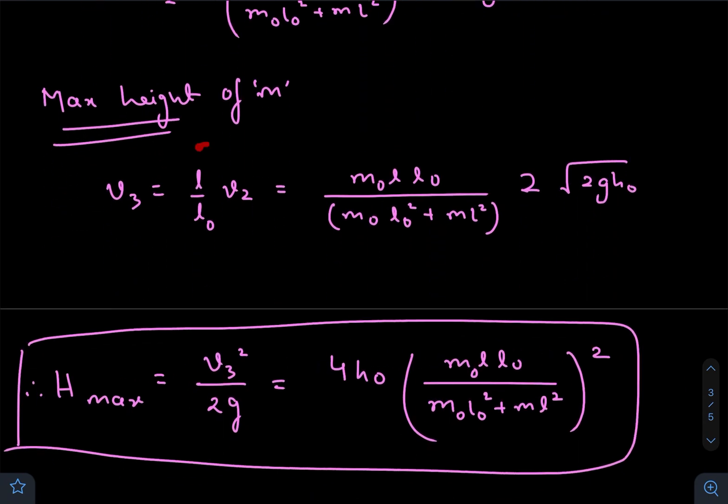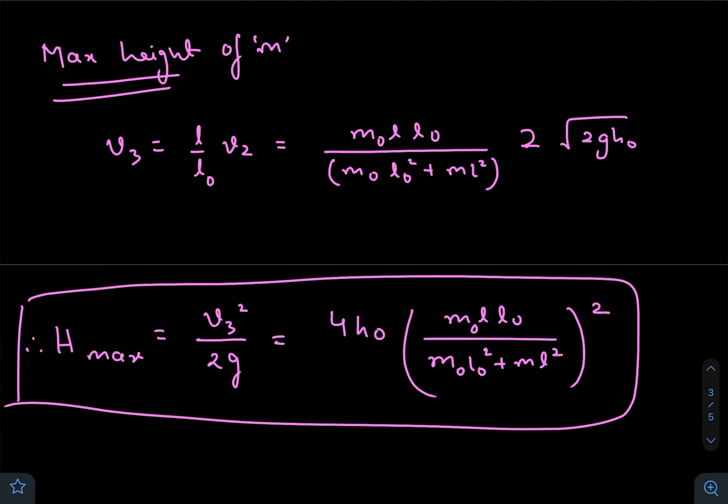Using v₃ from v₂, we got v₃. Maximum height is v₃²/(2g), because if you throw something with speed v₃ under gravity, the maximum height it will reach is v₃²/(2g). So the final answer is this - the maximum height reached by the block.